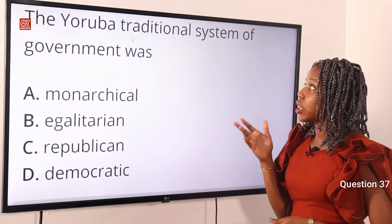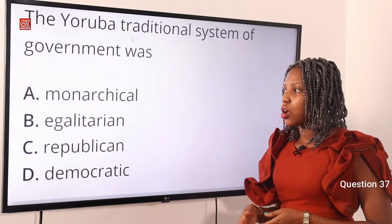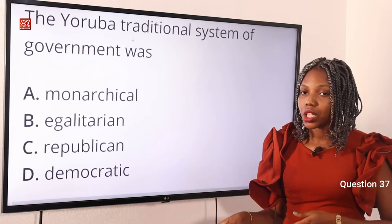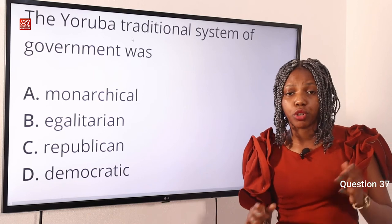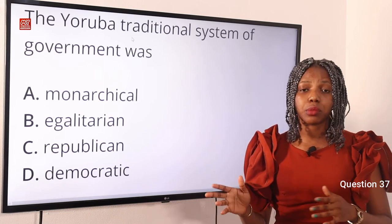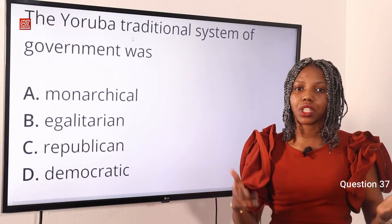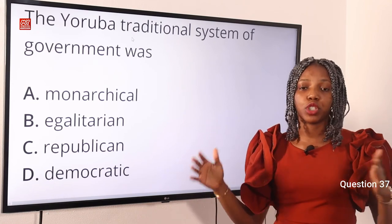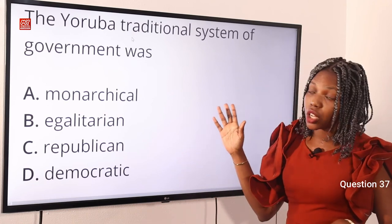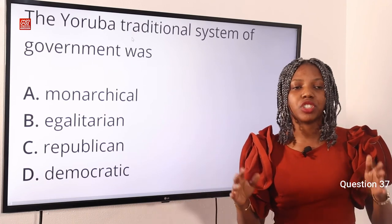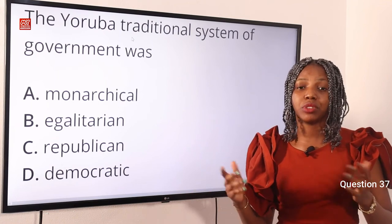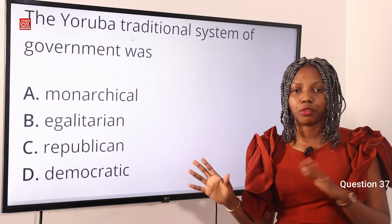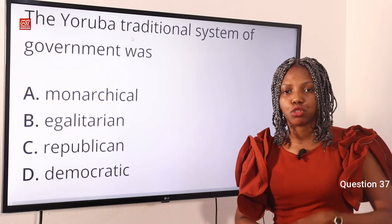Question 37. The European traditional system of government was: Option A, Monarchical. Option B, Egalitarian. Option C, Republican. Option D, Democratic. The answer is Monarchical — Option A. A monarchy is a system of government in which a monarch, simply a king or queen, rules. The Oba was the ruler and head of political administration in the Yoruba traditional system, while the Hausa can be described as theocratic and the Igbo as quasi-democratic. Option A is correct.